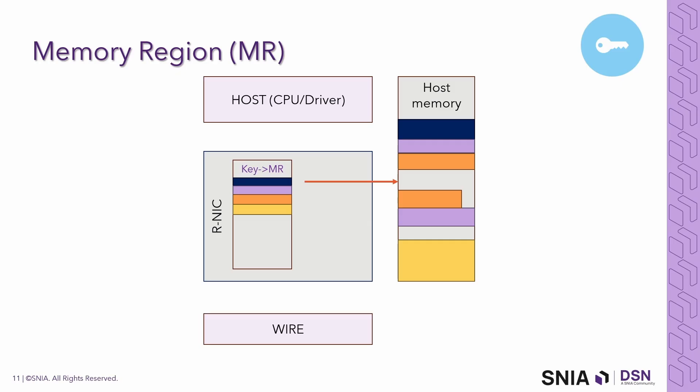Every memory region actually has two keys: the local key, L-key, and the remote key, R-key. When the RNIC receives a request from the host, it will contain an L-key used for the key-to-MR mapping. When the RNIC receives a request from the wire, it will get the R-key from the packet, also used for key-to-MR mapping. Once you have the MR mapping, the RNIC can calculate the address on the host based on metadata preserved for every MR. The values of the keys, lookup table mappings, and storing of the metadata are implemented differently by different RDMA vendors, but the concept is the same.